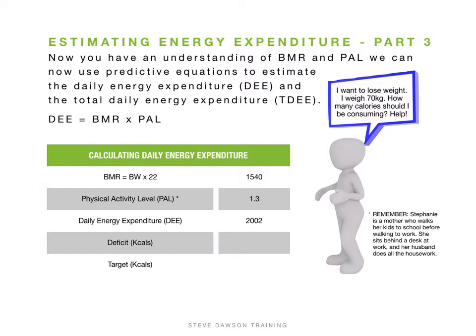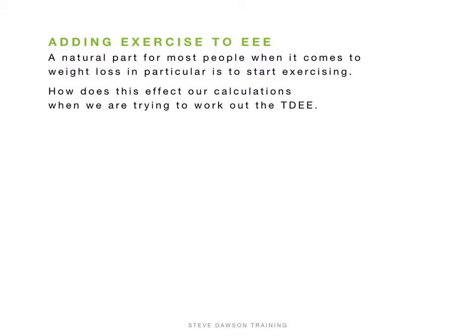Since she wants to lose weight, she needs to be in a deficit. From the first presentation, a good place to start is a deficit of about 500 calories. So we subtract 500 from her DEE of 2,002, giving target calories of 1,502. To summarise: BMR × PAL = DEE, then subtract your chosen deficit to get your target calories.